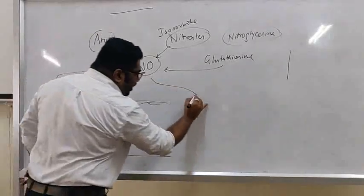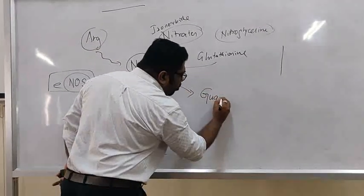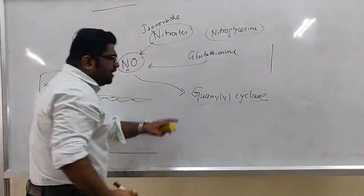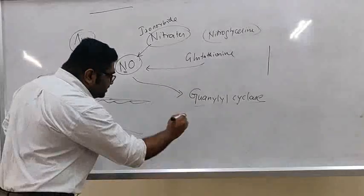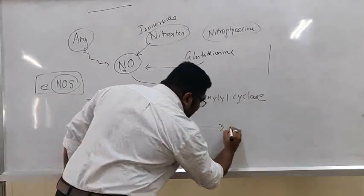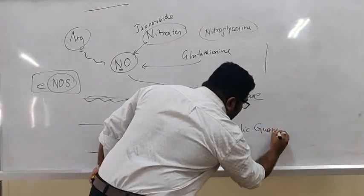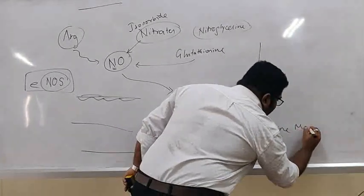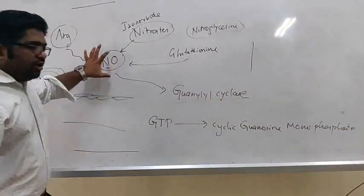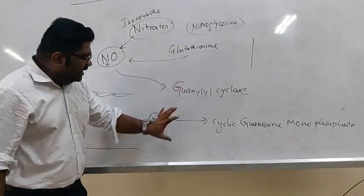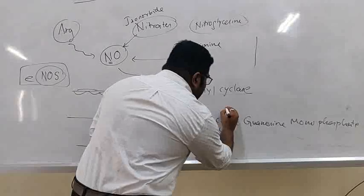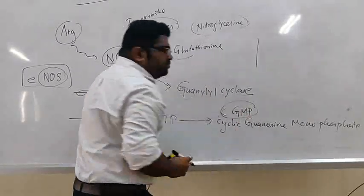That nitric oxide will activate an enzyme called guanylyl cyclase. What is the function of this enzyme? It converts guanosine triphosphate into cyclic guanosine monophosphate. Nitric oxide will activate guanylyl cyclase which will convert GTP into cyclic guanosine monophosphate, or in simple terms, cyclic GMP.